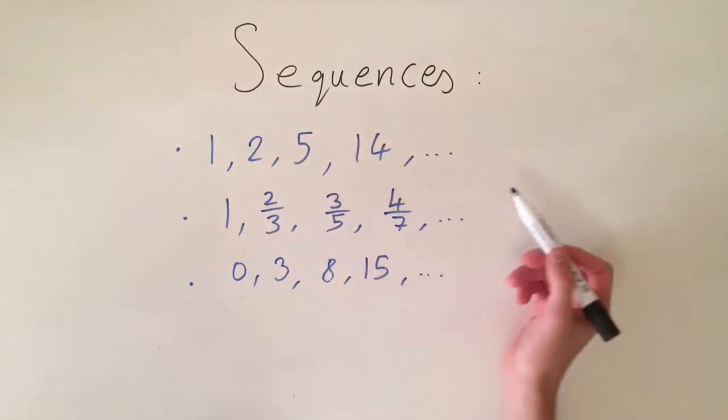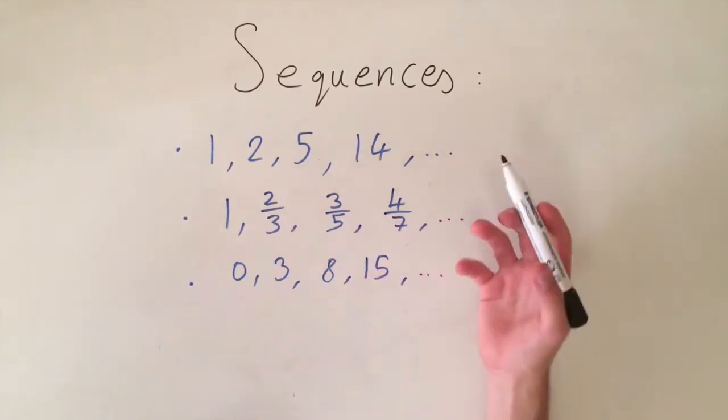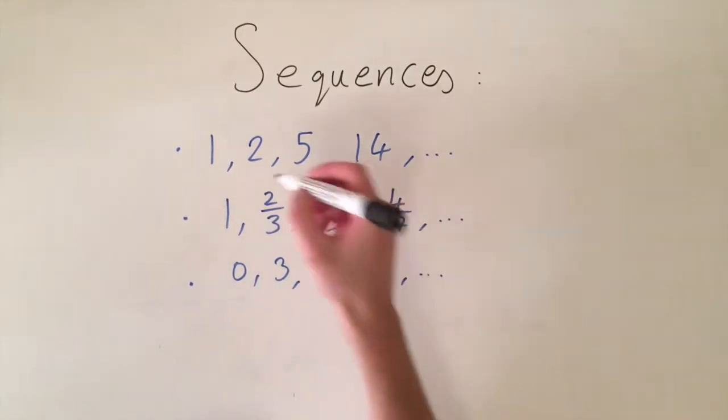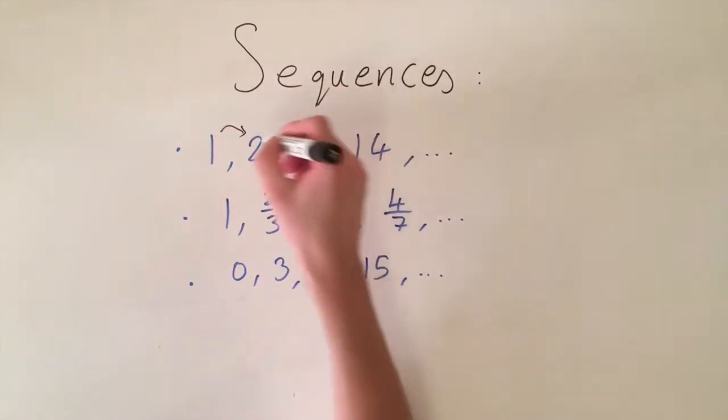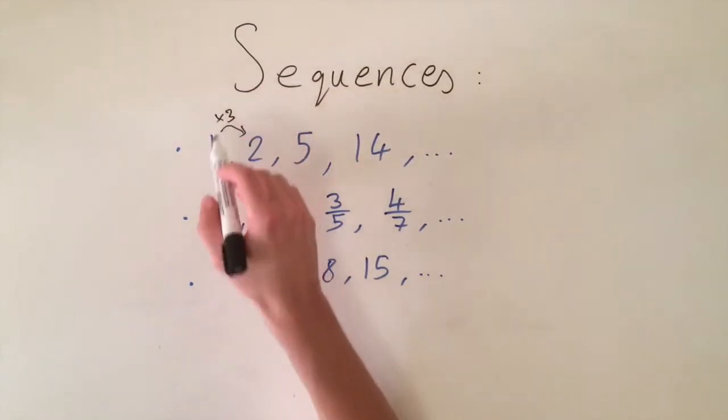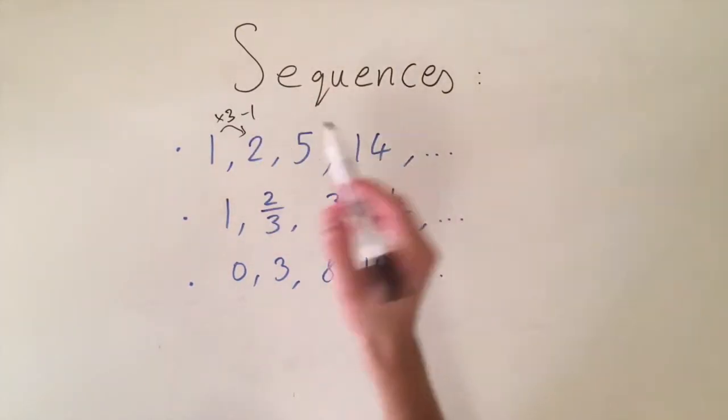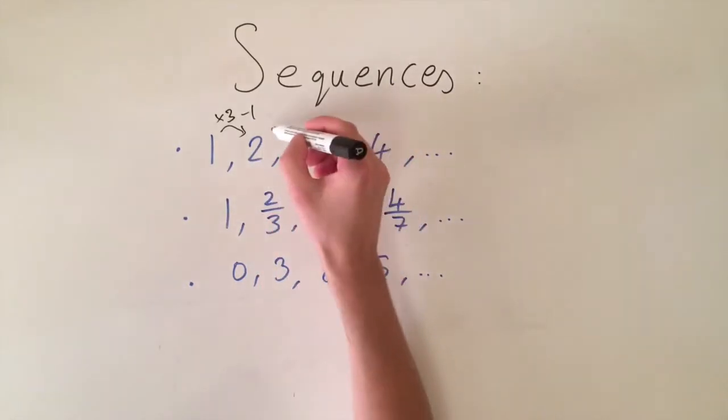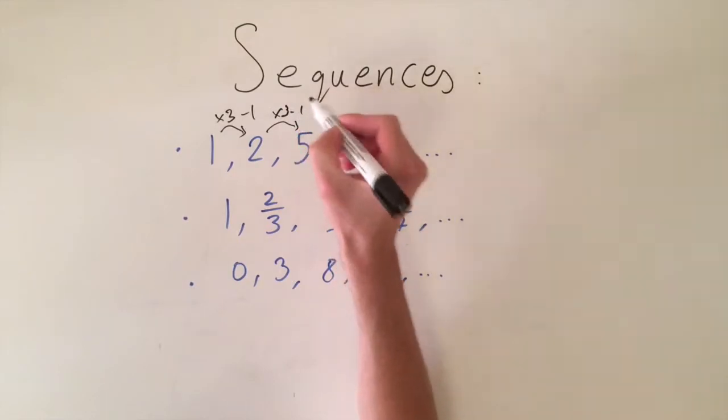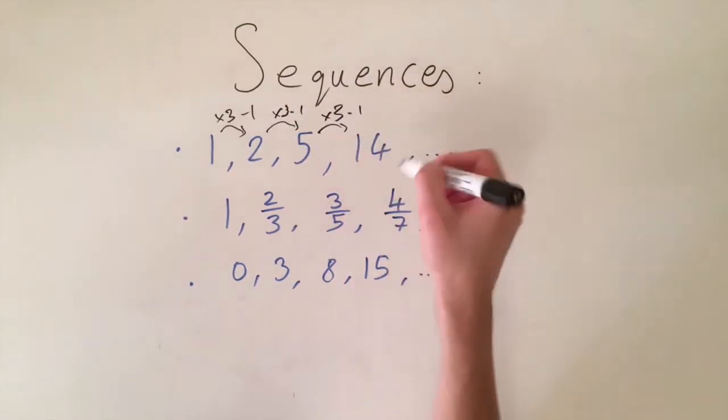So for the first one we again have two operations going on at the same time so it might not seem obvious what the pattern is at first but we can look at the first few terms and we're actually multiplying by 3 so 1 multiplied by 3 gives us 3 and then we're also subtracting by 1. So 1 times 3 is 3 minus 1 gives us 2 and then the same thing here 2 times 3 is 6 and minus 1 is 5 and then 5 times 3 minus 1 gives us 14.